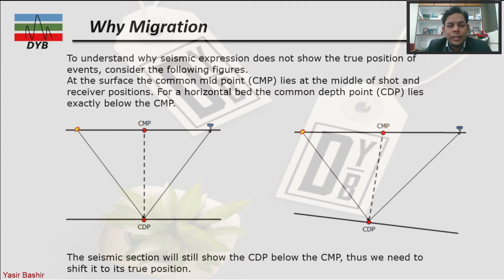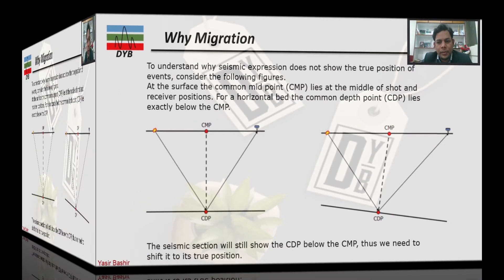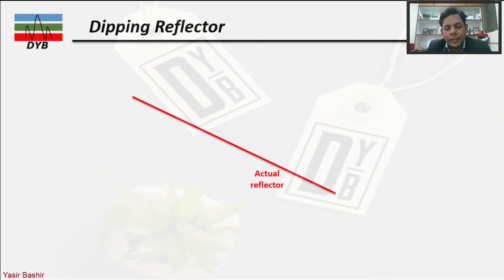Here is why we need to apply migration. If we have a horizontal reflector in the subsurface with a shot and receiver at the surface, the CMP is exactly below the CDP. But with dipping reflectors, when waves travel down and reflect back, the CMP and CDP are no longer aligned. The recorded reflection appears to come from the wrong position, which is why seismic migration is needed.